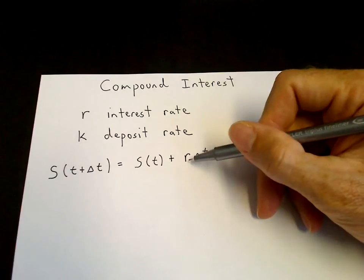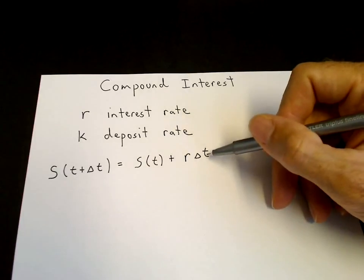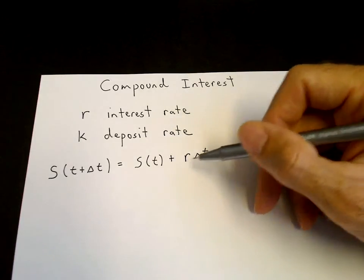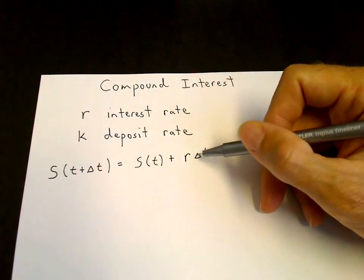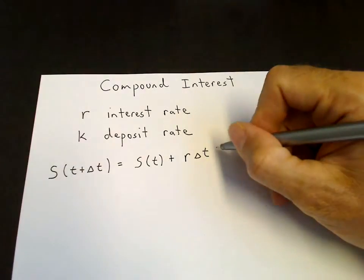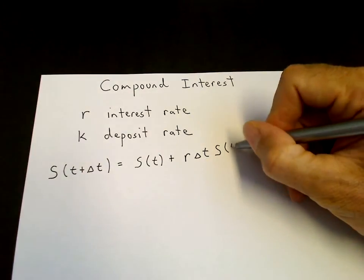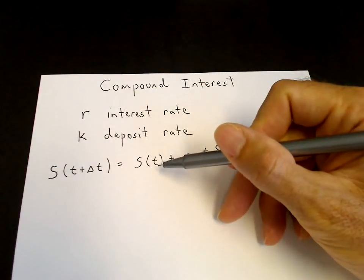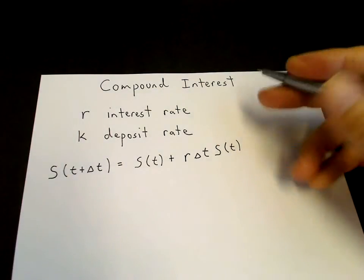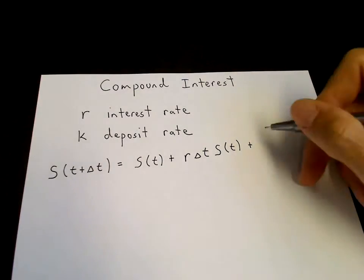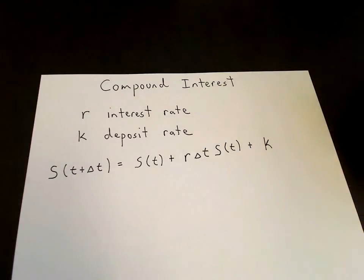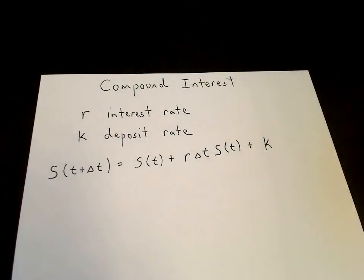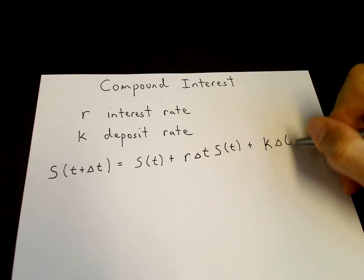For example, if r is 6% per year, so 0.06 per year, and delta t is one month (1/12), you receive 0.06 times 1/12 of the account balance as interest. Additionally, if you deposit at rate k, then the amount deposited over delta t is k times delta t. So if k is 6,000 per year and delta t is one twelfth, you deposit $500 after one month.